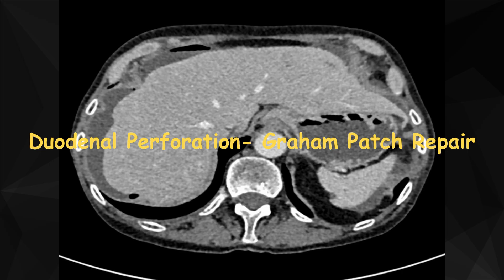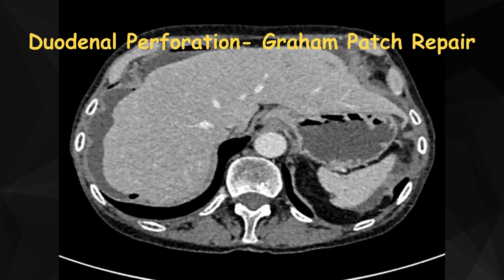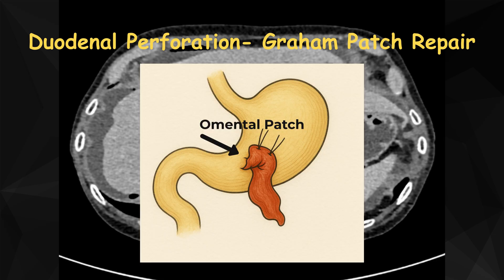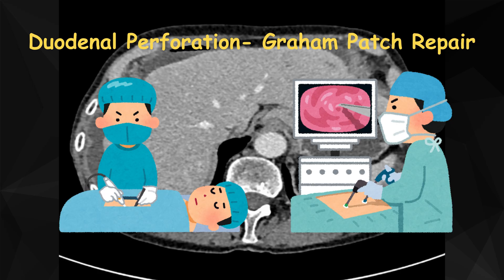You might already know about the Graham patch. Just to recap, a Graham patch is a surgical technique in which a small piece of the omentum is placed over a perforation. Typically, it is used in gastric or duodenal perforation and is sutured at the place of perforation to seal the defect and prevent further leakage. It can be performed either through open or laparoscopic surgery.